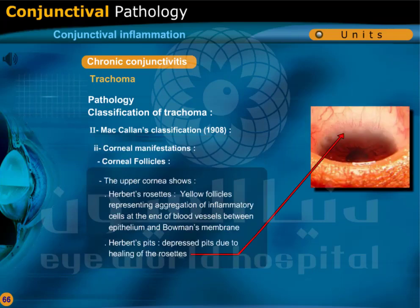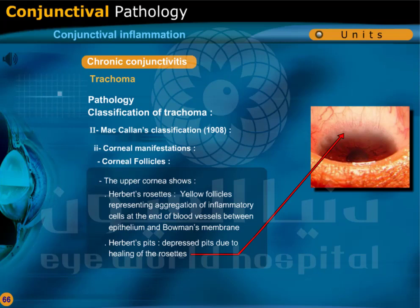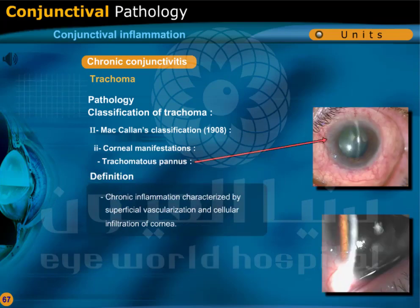Corneal manifestations of MacCallan's classification of trachoma: corneal follicles — the upper cornea shows Herbert's rosettes, which are yellow follicles representing aggregation of inflammatory cells at the end of blood vessels between the epithelium and Bowman's membrane. Herbert's pits are depressed pits due to healing of the rosettes. Trachomatous pannus is chronic inflammation characterized by superficial vascularization and cellular infiltration of the cornea.